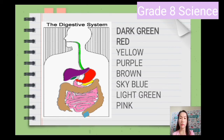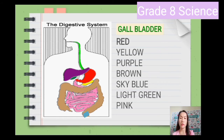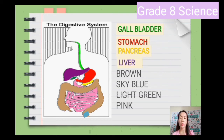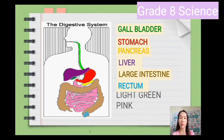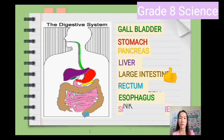So what do you think is the name of the part in the color dark green? If you think that is the gallbladder, you are correct. How about the red part? The answer is stomach. The yellow part is the pancreas. The purple part is the liver. The brown part is the large intestine. The sky blue part is the rectum. The light green part is the esophagus. And the pink part — that is the small intestine. I hope you got the perfect score for this exercise.